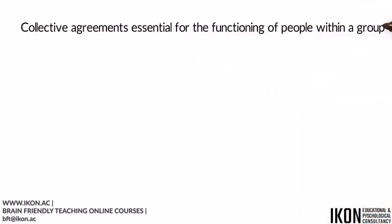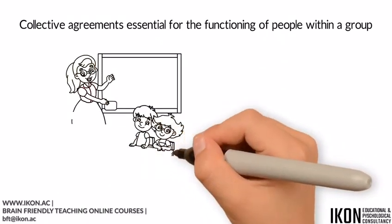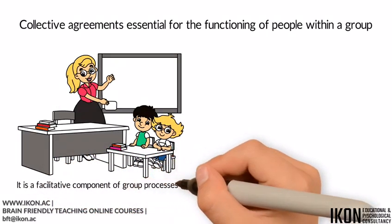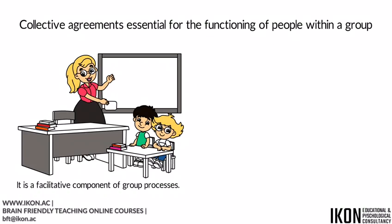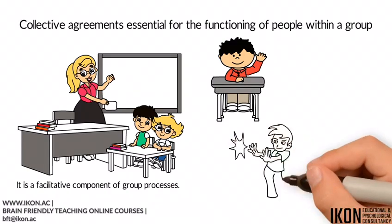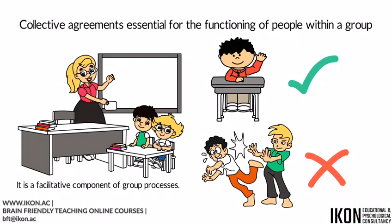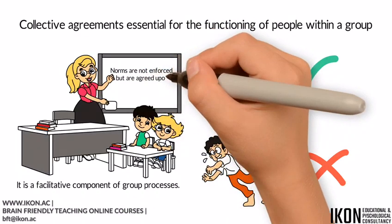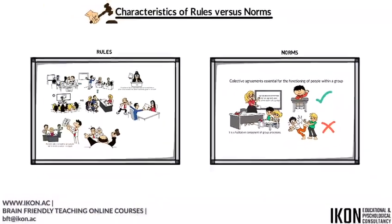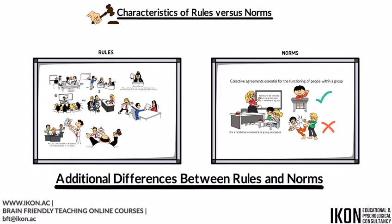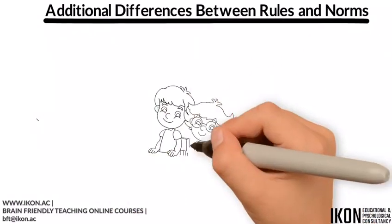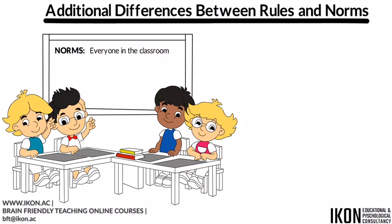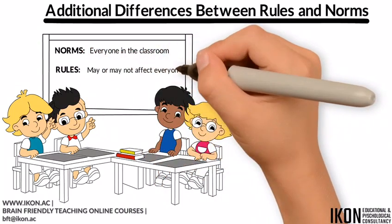Norms, on the other hand, are collective agreements essential for the functioning of people within a group, such as a typical classroom. It is a facilitative component of group processes. In the case of a classroom, norms are agreements on the type of words, behaviors, and mental patterns that are acceptable and unacceptable between teachers and students and among students themselves. Norms are not enforced, but are agreed upon by all members of a group. Another difference between rules and norms is that norms affect everyone in the classroom, while rules may or may not affect everyone.